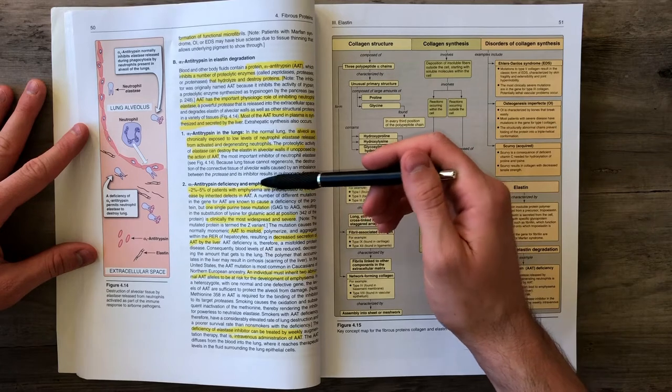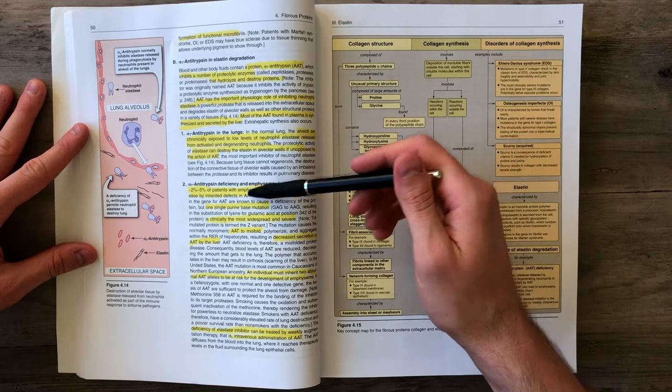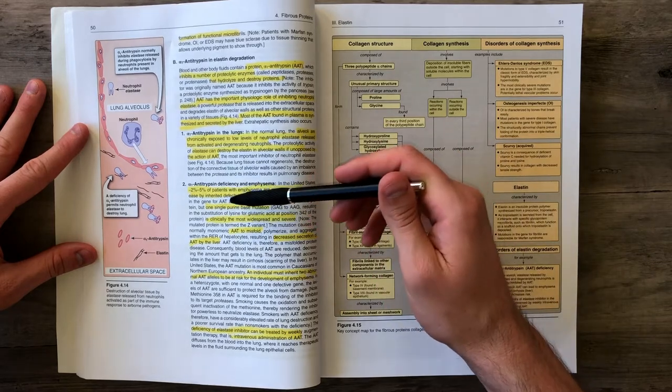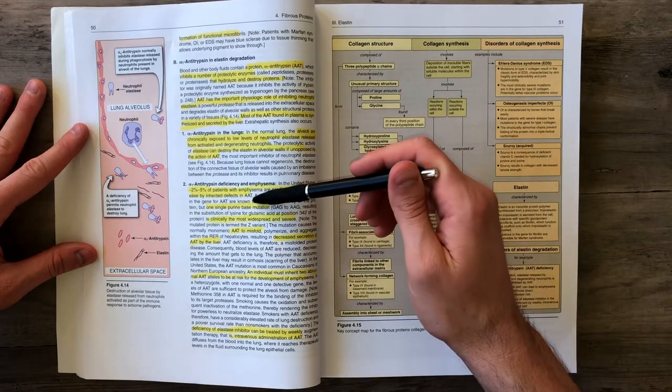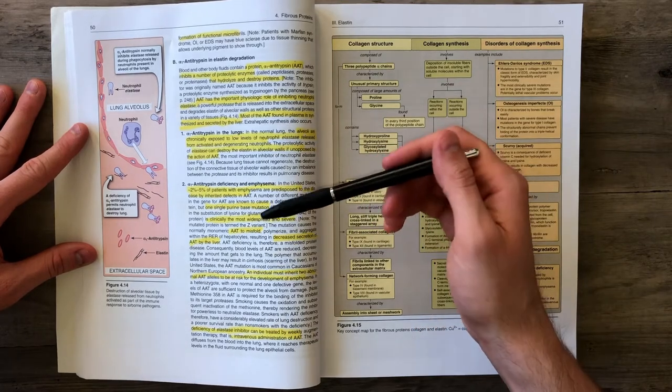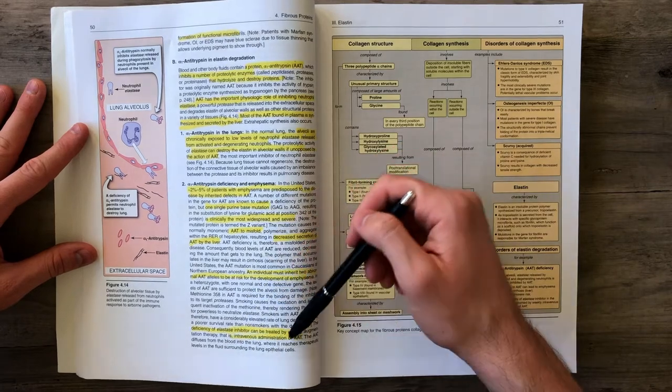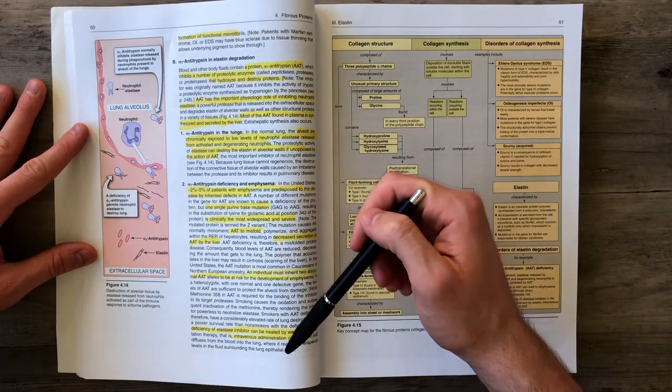If we don't produce alpha-1 antitrypsin, which can occur due to a genetic disorder with a single purine-based mutation, that results in widespread breakdown of elastic tissue. That can be cured by intravenous administration of alpha-1 antitrypsin every single week.